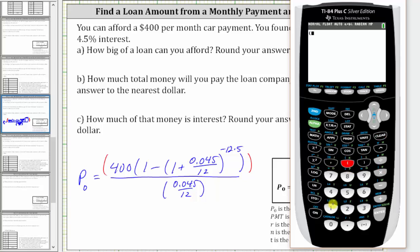We enter open parenthesis 400, open parenthesis one minus open parenthesis, one plus 0.045 divided by 12, close parenthesis, raised to the power of negative 12 times five, which is negative 60, right arrow to exit the exponent, close parenthesis, close parenthesis, divided by open parenthesis 0.045 divided by 12, close parenthesis and enter.